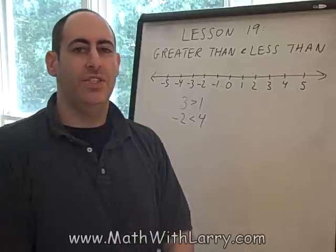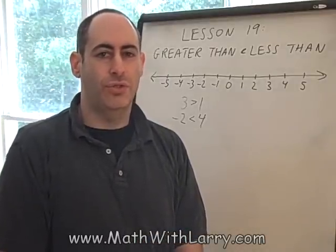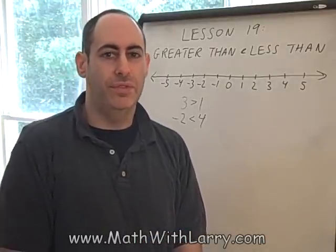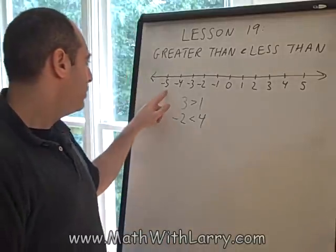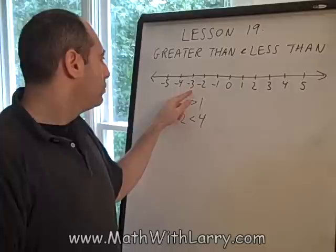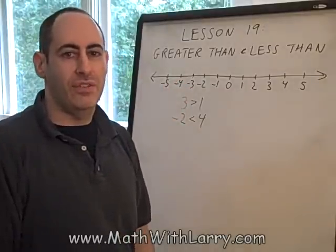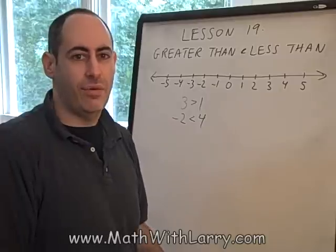Now, for this next example, I'd like to know if negative 5 is larger or smaller than negative 3. Let's take a look at our number line. Negative 5 is on the left of negative 3, or we can say that negative 3 is to the right of negative 5. That shows us that negative 5 is less than negative 3.